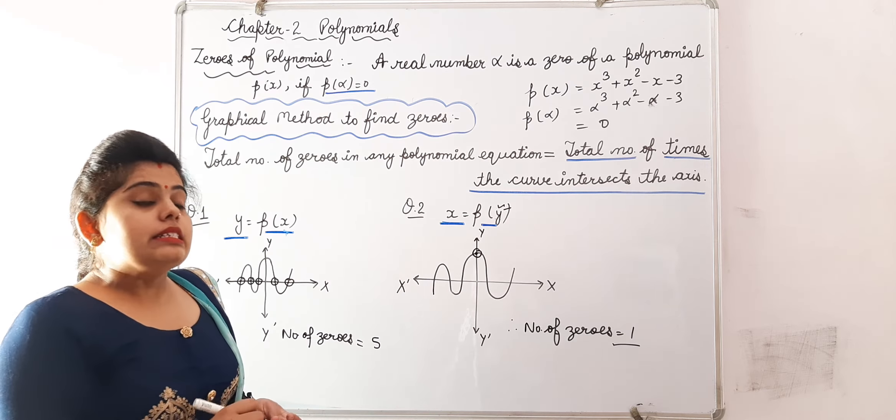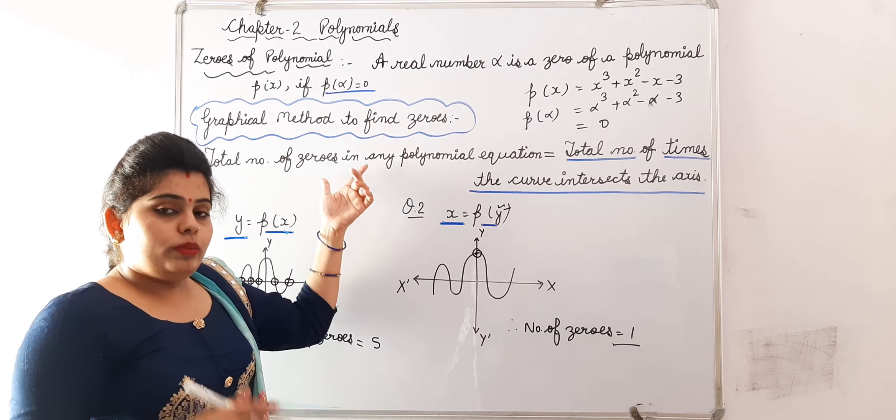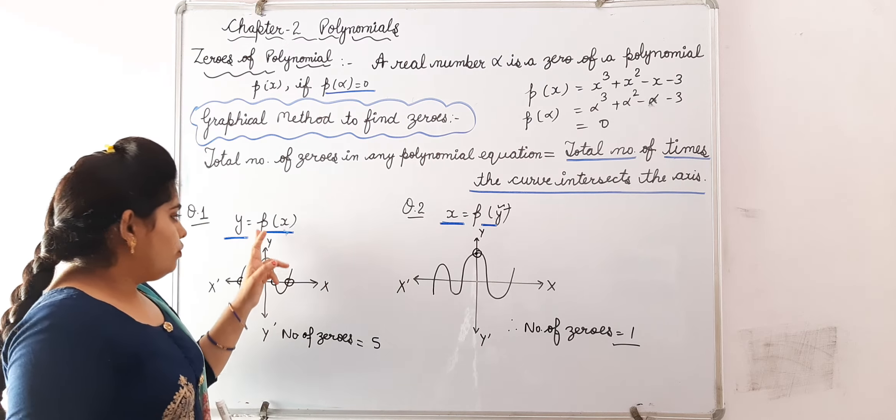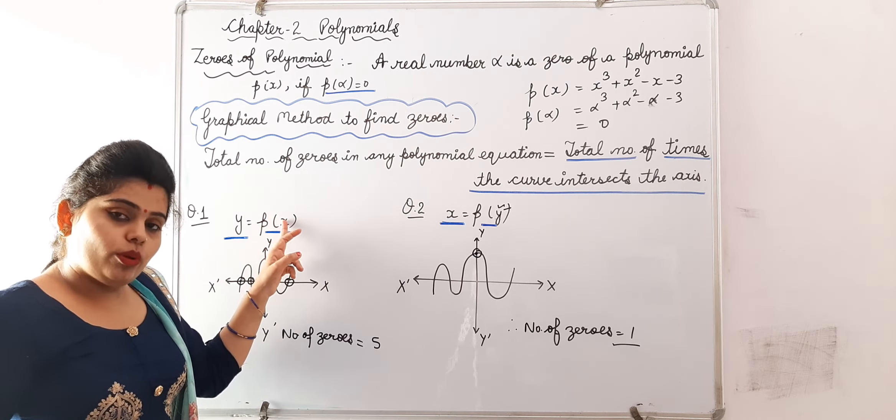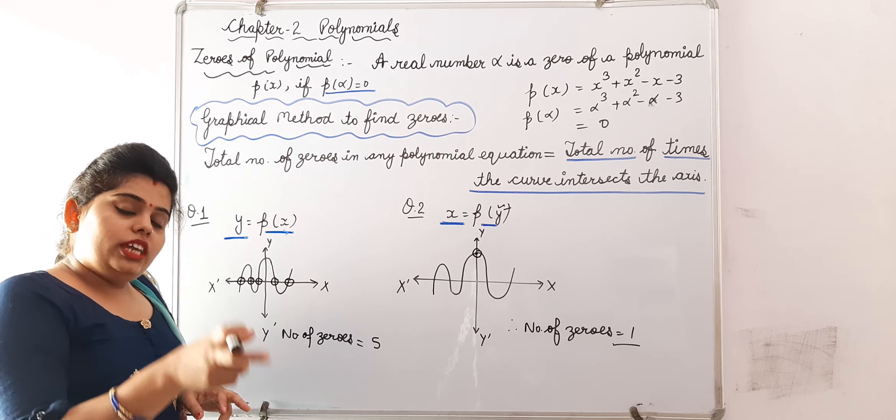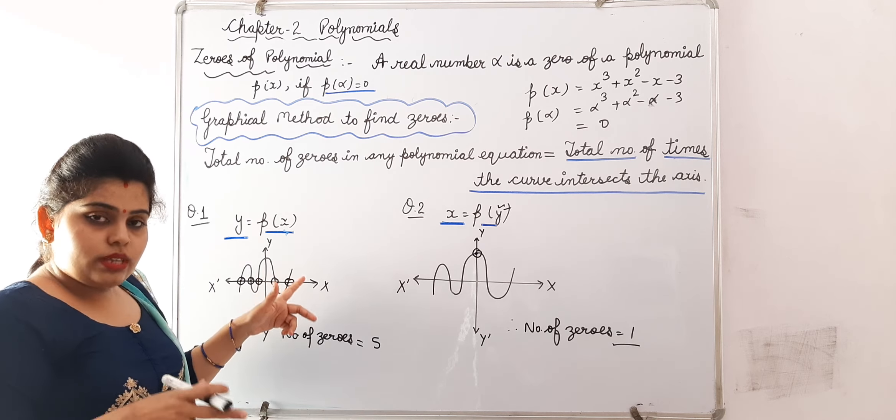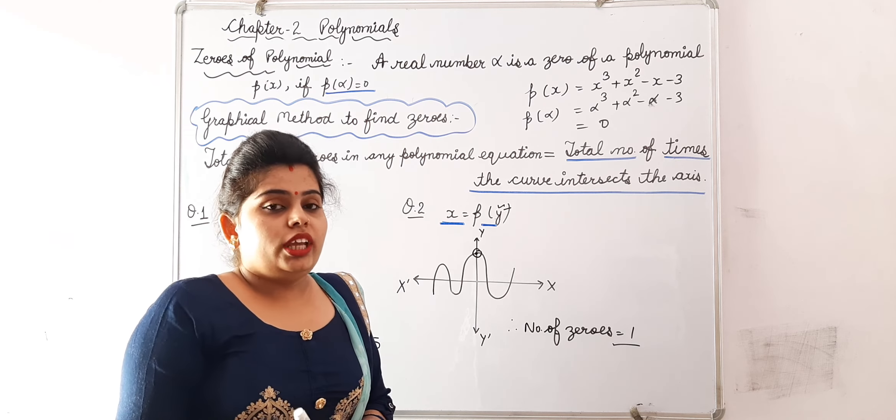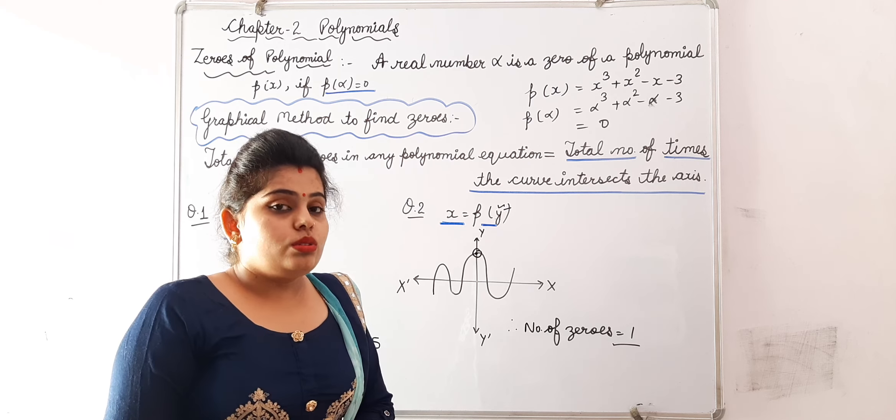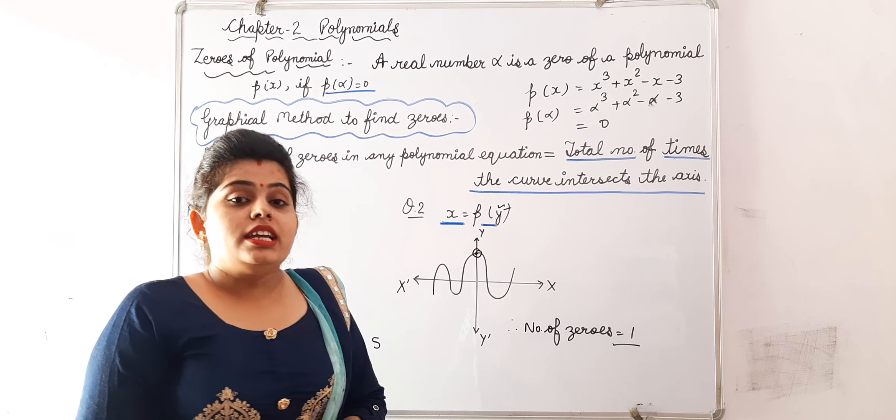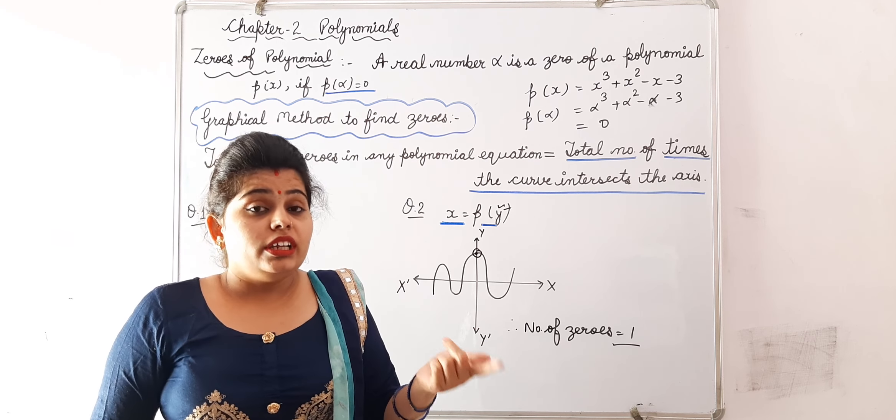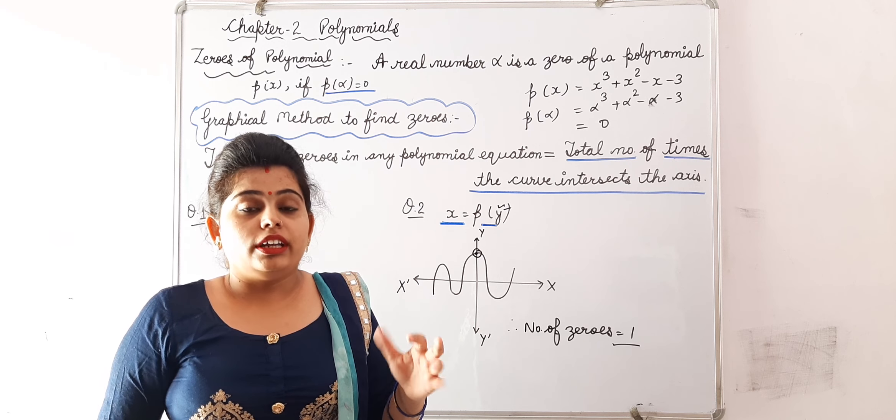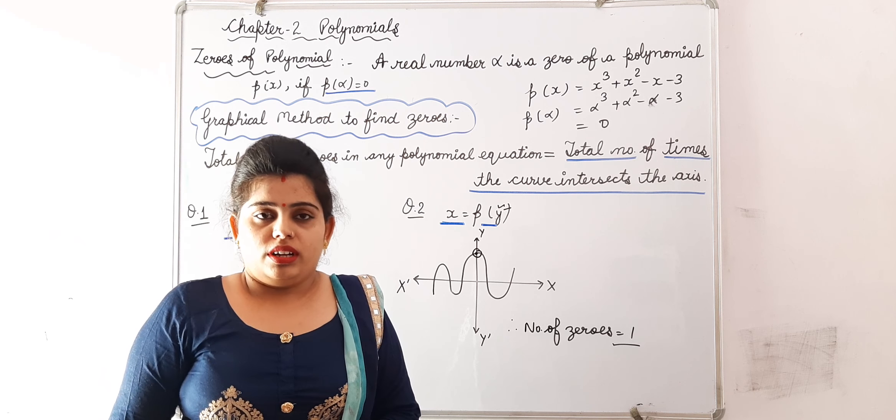I am repeating - whichever equation is given to you, your polynomial in whichever form it will be, the given curve will intersect that axis as many number of times, that many will be your number of zeros. And on that basis we can find out whether our polynomial is linear, quadratic, bi-quadratic, cubic, or polynomial.